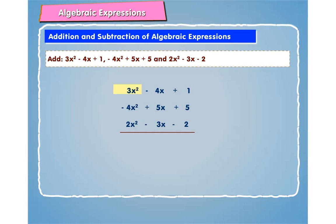Now adding 3x squared minus 4x squared and 2x squared, we get x squared. When minus 4x, 5x and minus 3x are added, we get minus 2x. And lastly, adding 1, 5 and minus 2, we get 4. Thus we get the answer as x squared minus 2x plus 4.